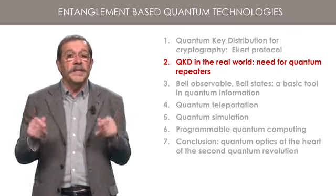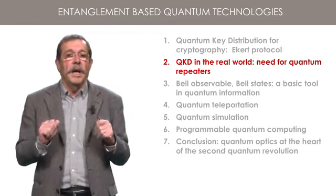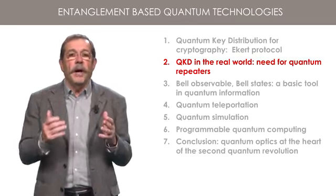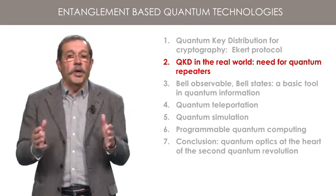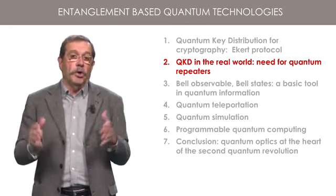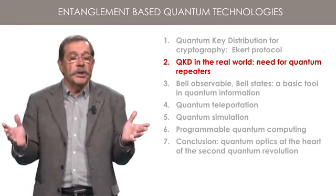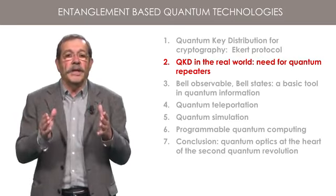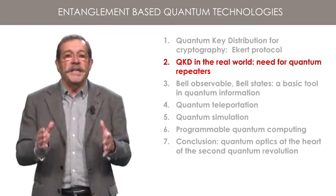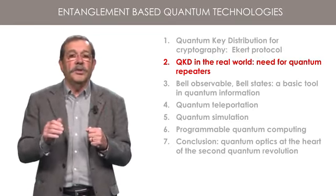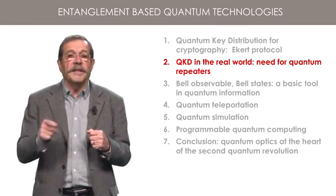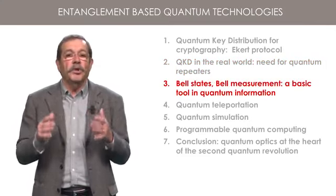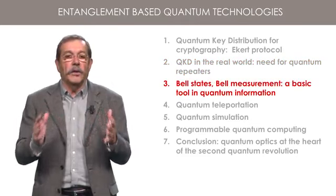Unless one uses satellite distribution from space, I will also describe what would be quantum repeaters, allowing one to extend the range, not only of the QKD protocol, but also more generally of quantum networks. A fascinating tool to achieve that goal is quantum teleportation. But in order to understand quantum teleportation, you must first get familiar with Bell states and Bell measurements, an important tool in entanglement-based quantum technologies.